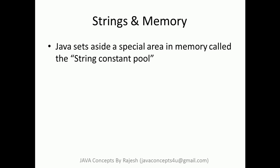If it finds an object having the same value, it makes the reference variable refer to that existing object. So now we have the same string object being referred to by two or more variables. If it doesn't find this object in the String Constant Pool, it goes ahead and creates a new object. In this way it avoids creation of redundant string objects.